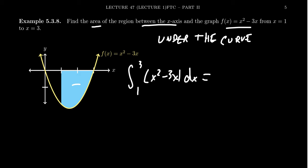We want to take the antiderivative of x² - 3x. So we're going to get x³/3 - 3x²/2 evaluated from 1 to 3.